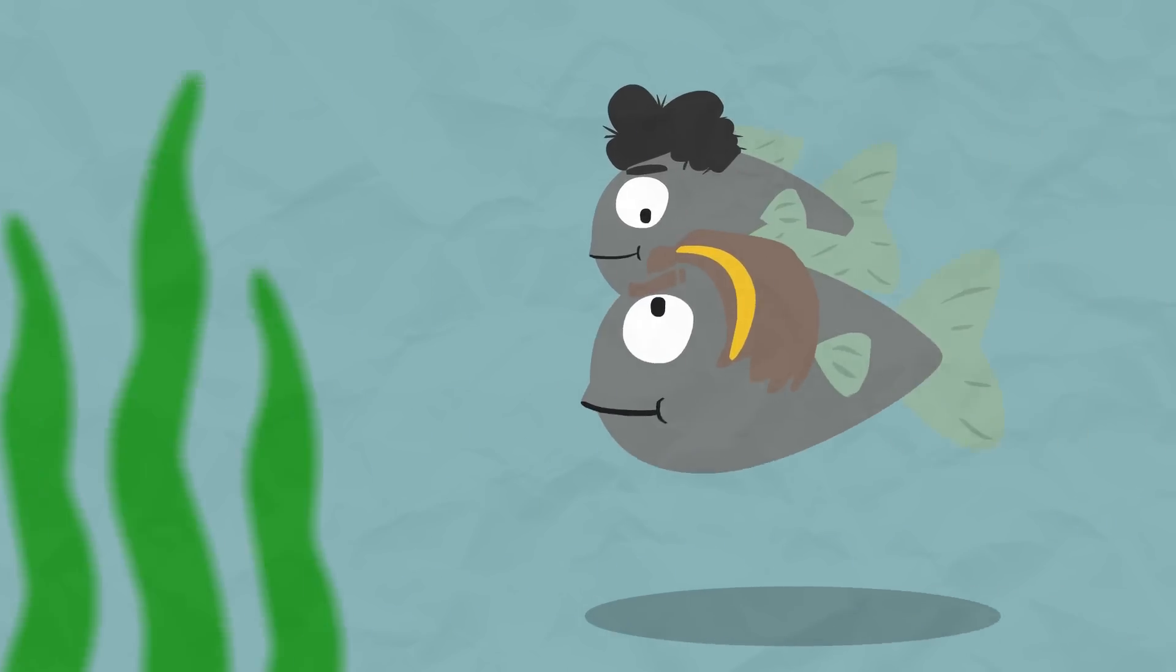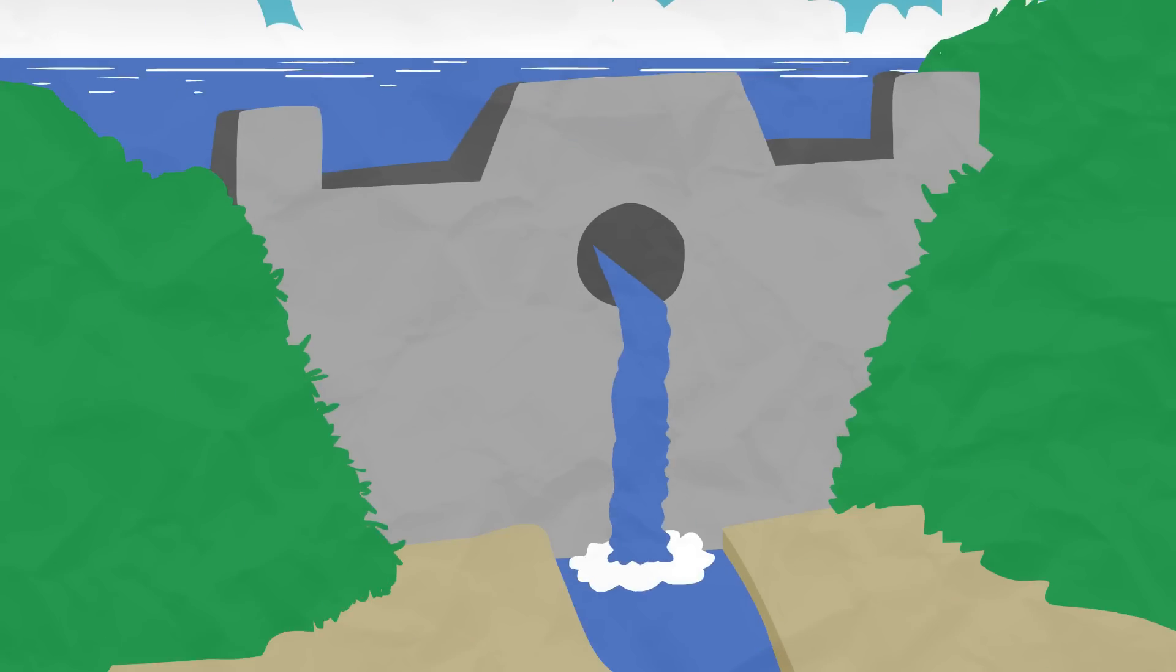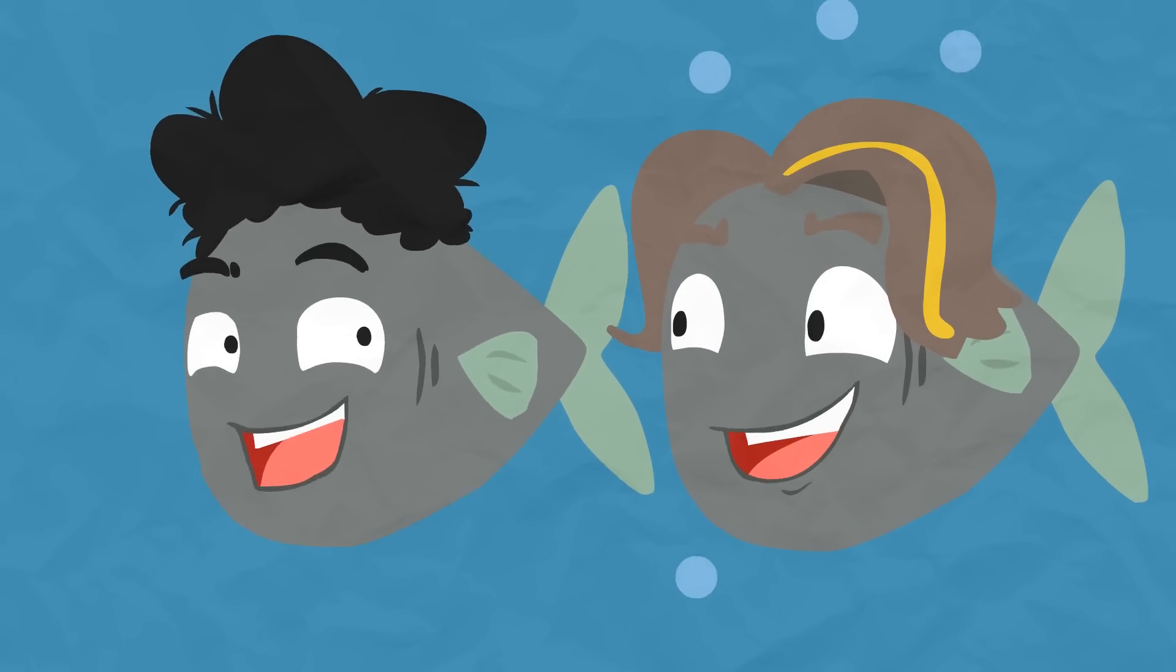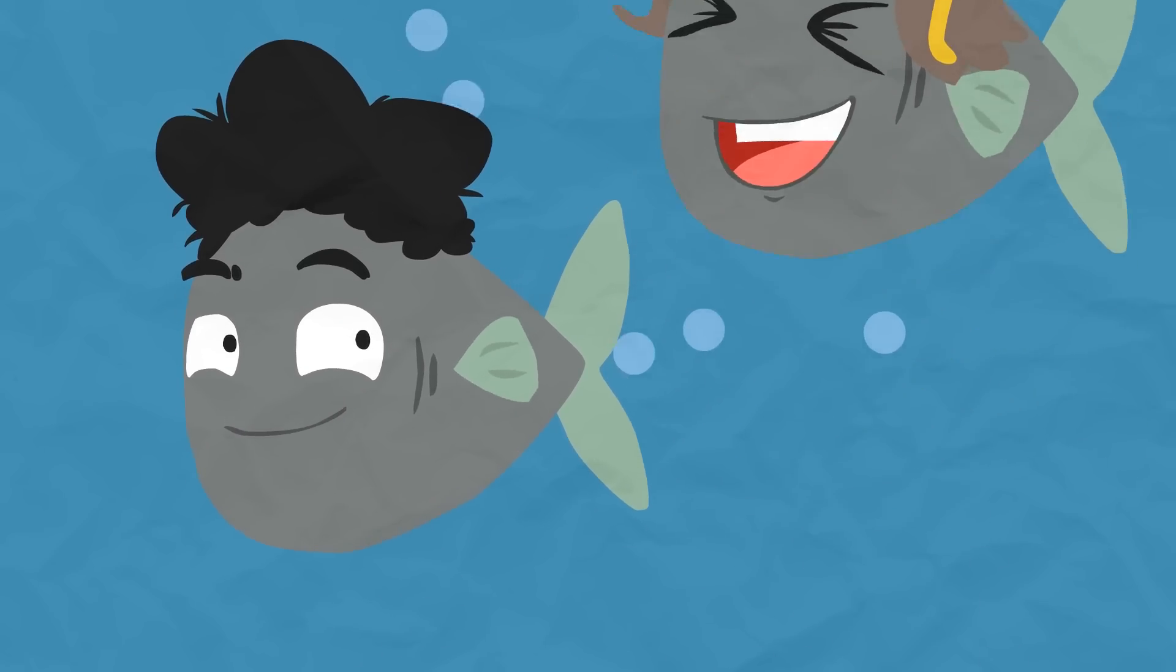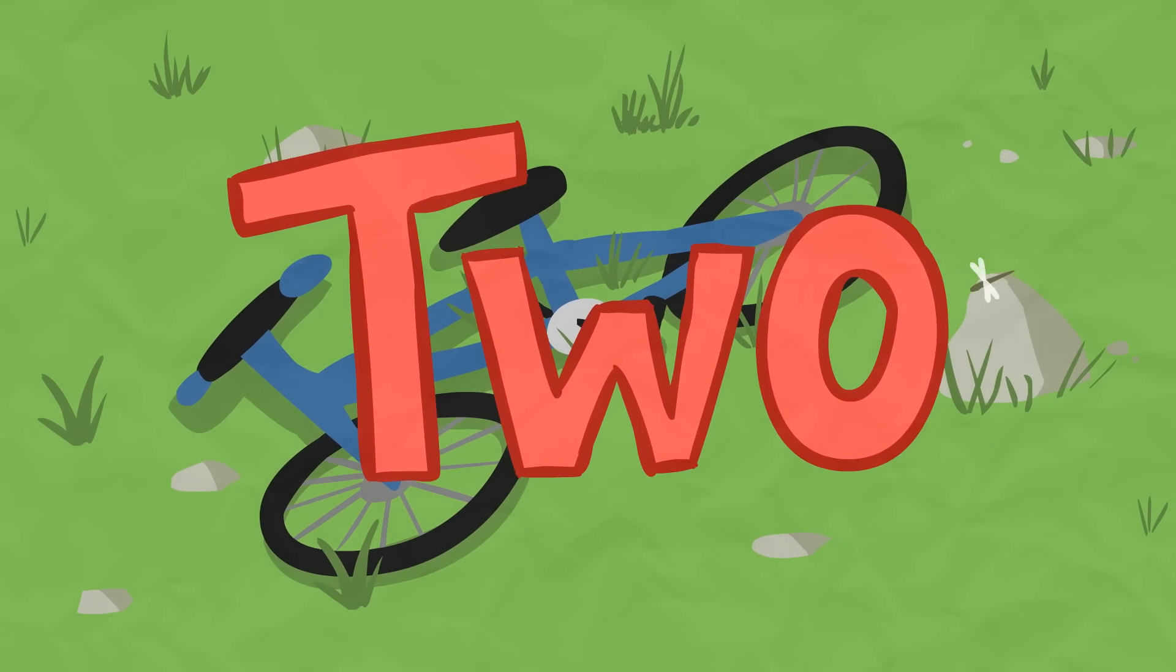Two fish swim into a concrete wall. The one turns to the other and says, damn! Why can't a bicycle stand up? Because it's too tired.